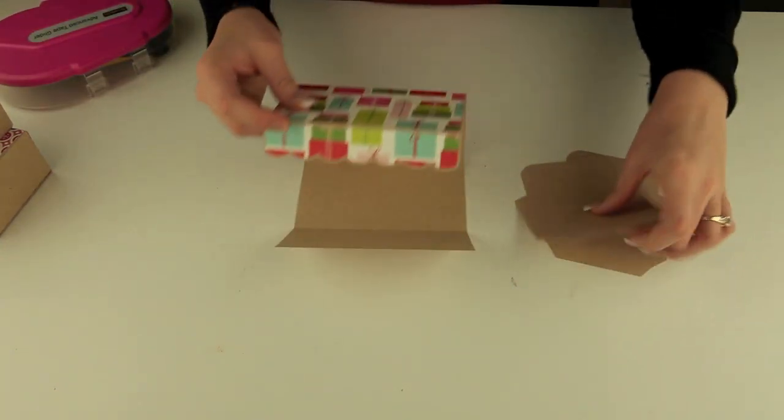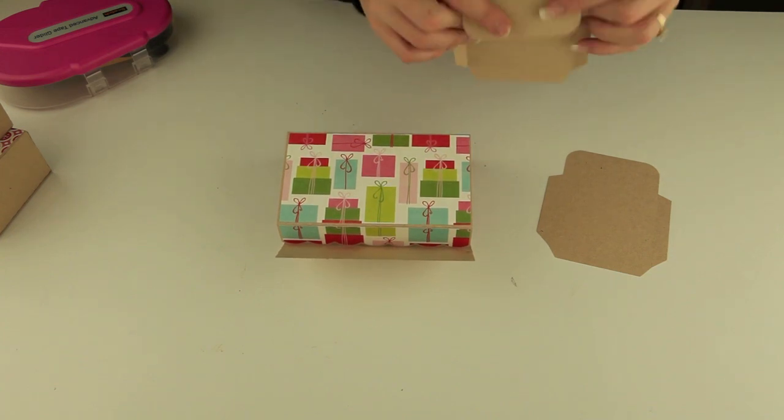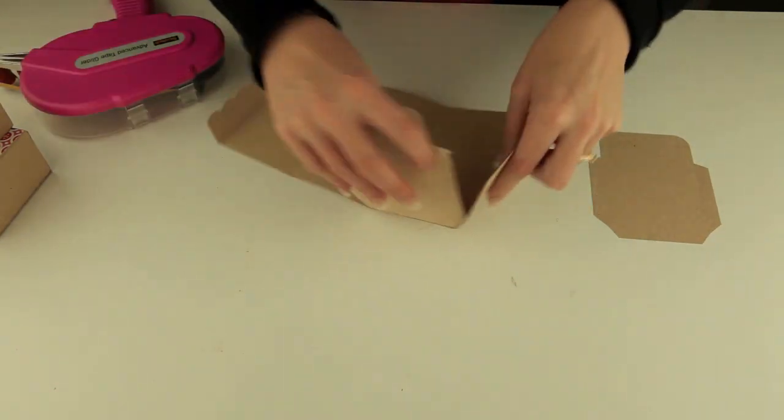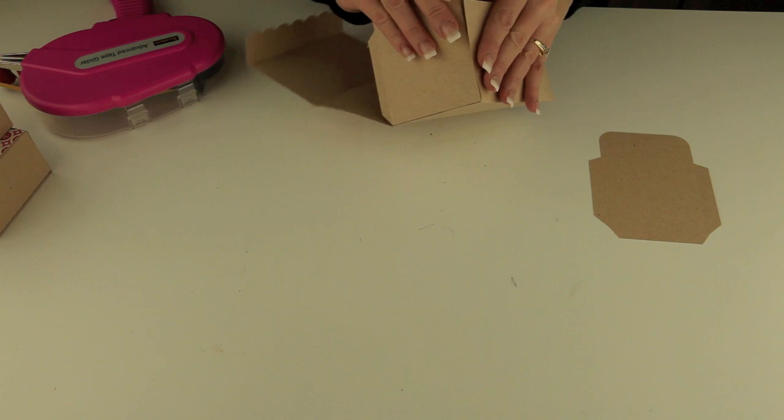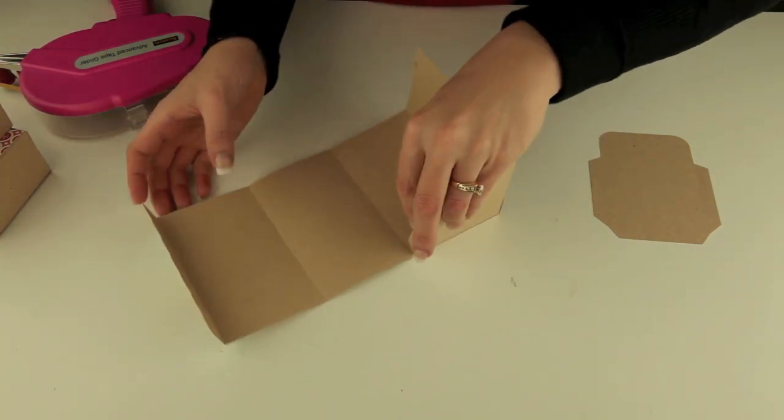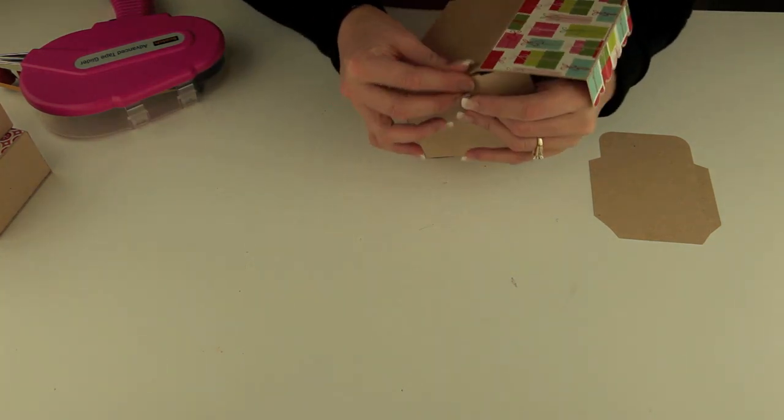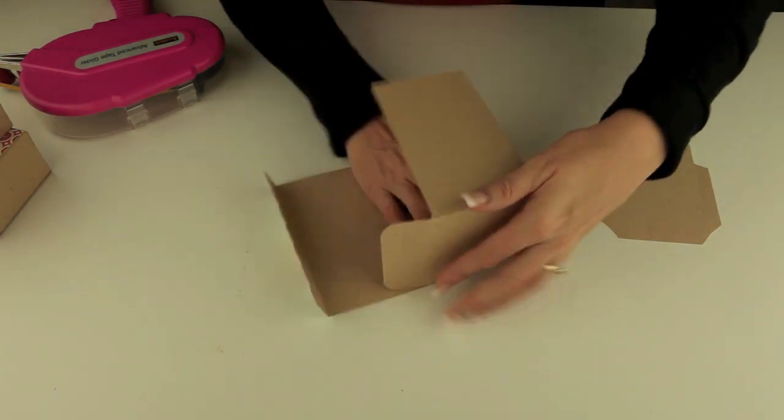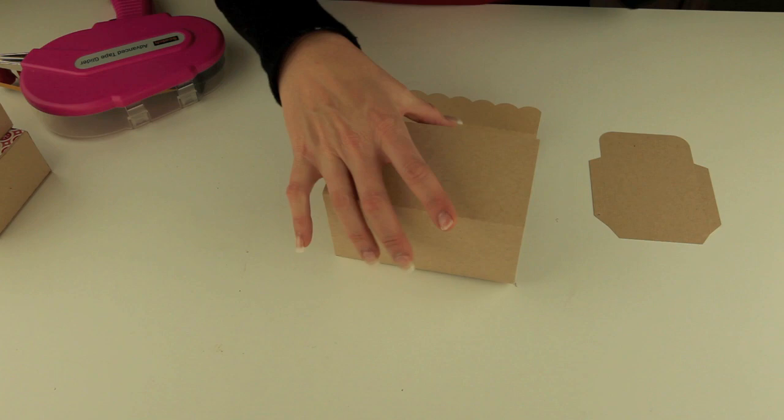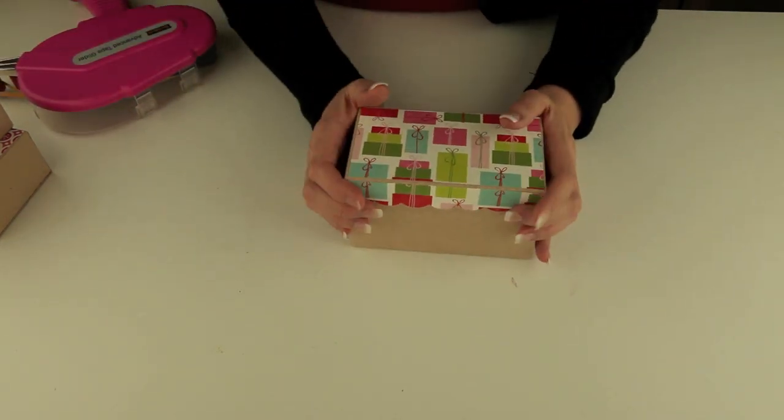Now we just need to install the two sides. We'll just repeat that same process for the other side of the box. Now your third box is put together.